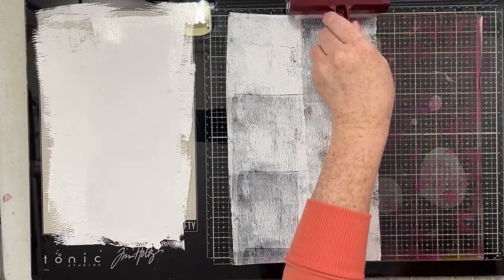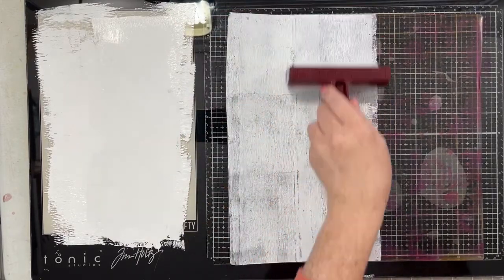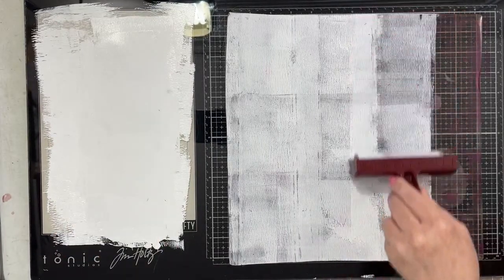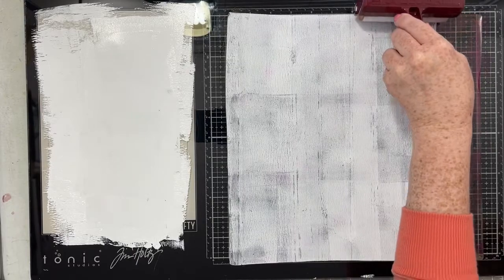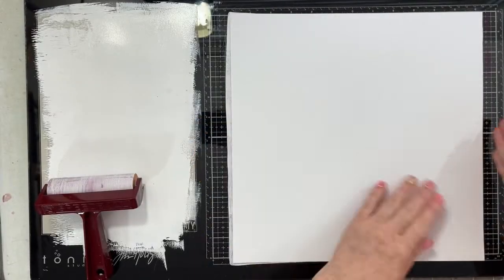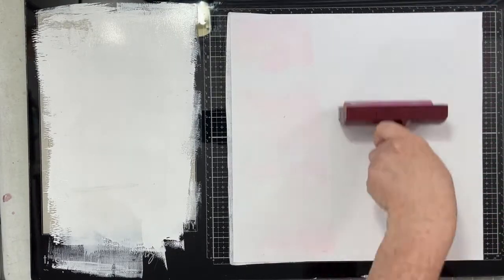Next, I am going to go ahead and add that white acrylic paint again over the entire gel press. And then I'm going to go ahead and lay down my coconut swirl white cardstock. Use the brayer again, give it a little bit of pressure. Make sure that the entire gel press is coming into contact with my paper.